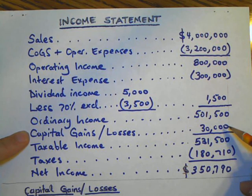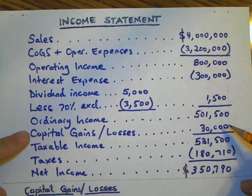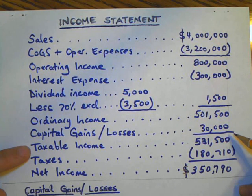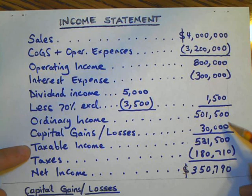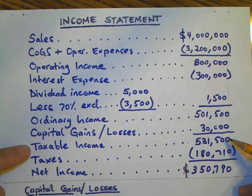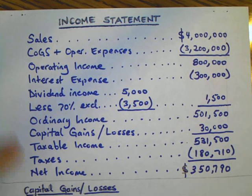If there were a capital loss, we wouldn't reflect it in the income statement the same way — I will show that in the next example. In this example we have a gain, so we reflect it in the income statement. Our total taxable income is five hundred and one thousand five hundred dollars plus thirty thousand dollars, which equals five hundred and thirty-one thousand five hundred dollars.